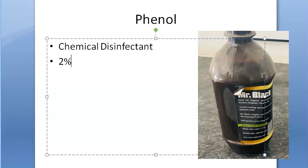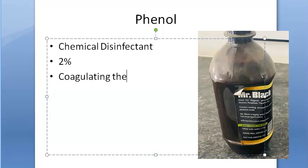2% phenol destroys and inhibits the growth of harmful microbes by coagulating the protoplasm of bacteria. How will it work? By coagulating the protoplasm of bacteria.